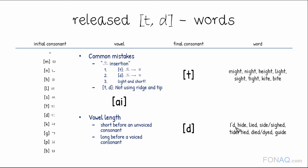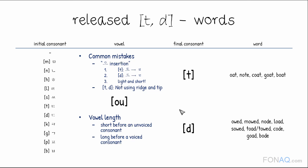Eyed, hide, lied, sighed, tied, died, guide. Vowel o with t and d: oat, note, coat, goat, boat, owed, mowed, node, load, sowed.